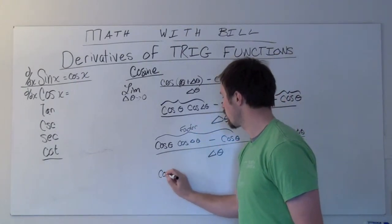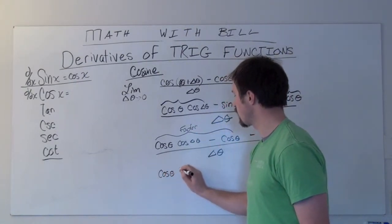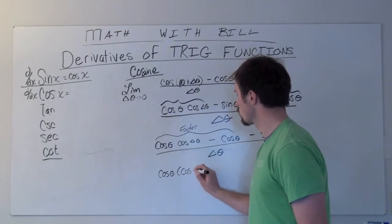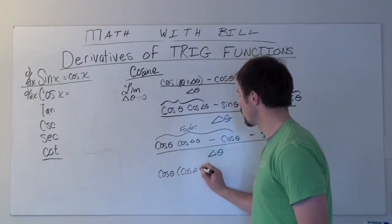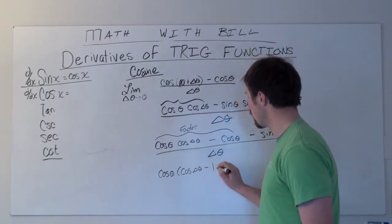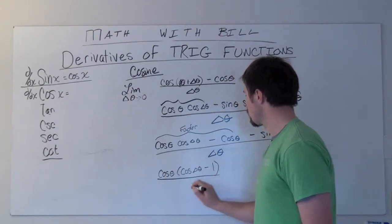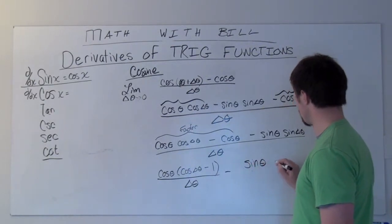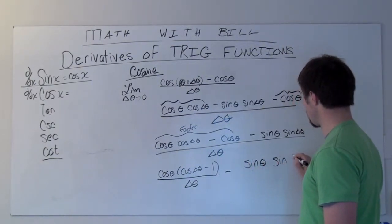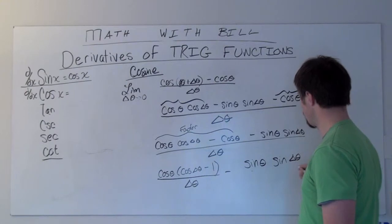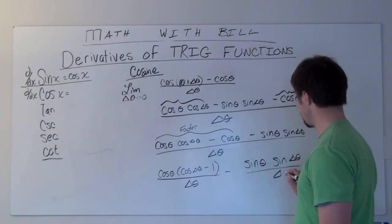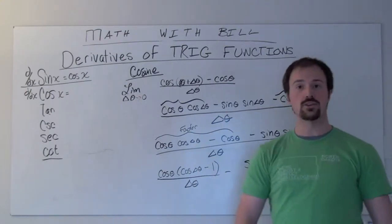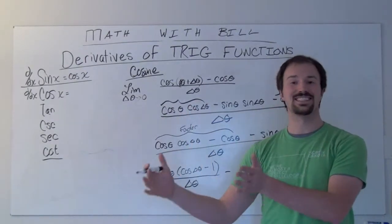What I end up with is cosine of theta times (cosine delta theta minus one), minus sine of theta times sine delta theta, all divided by delta theta.